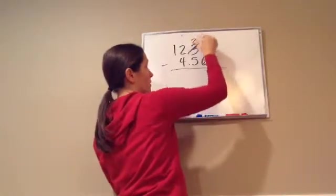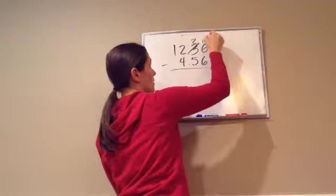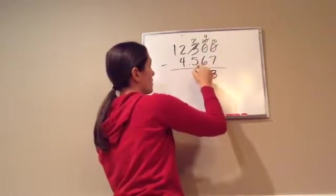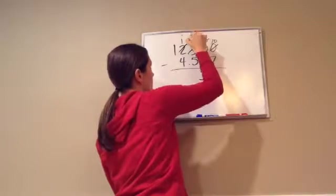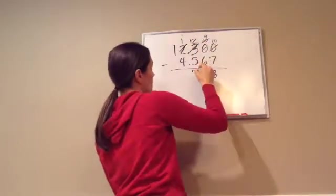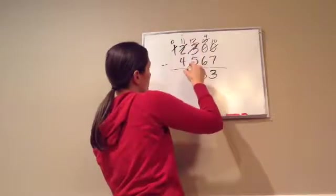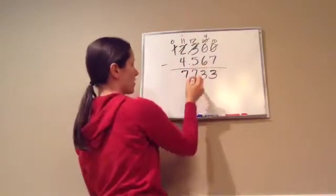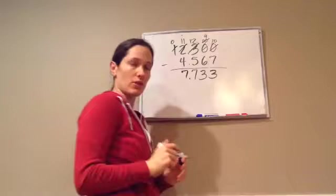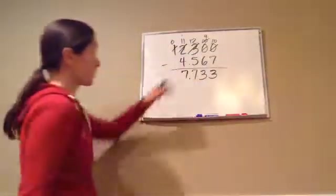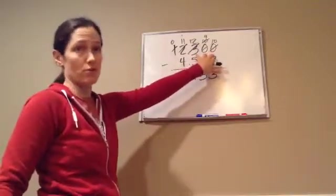Okay, so then we would go... 7.733. Okay? You got it? So that's how you would do that kind of problem. Okay? So you have to remember to put your zeros right there.